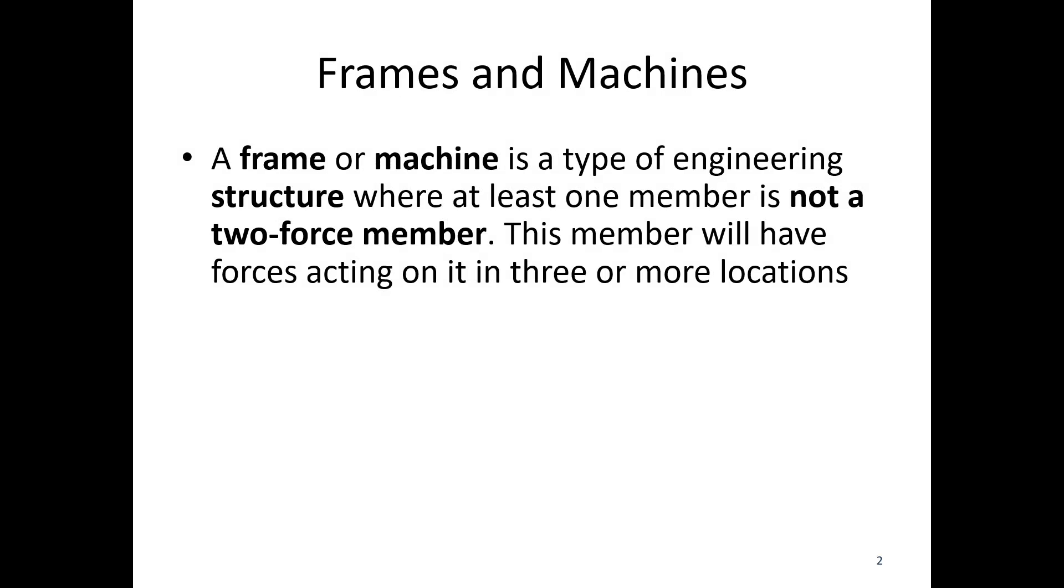A frame or machine is a type of engineering structure where at least one member is not a two-force member. This member will have forces acting on it in more than three locations. For example, this pair of scissors here - the two blade pieces are not two-force members. We would have presumably some paper or whatever we're cutting acting on one end, a pin joint in the middle, and the handle where you'd be pressing on the other end.